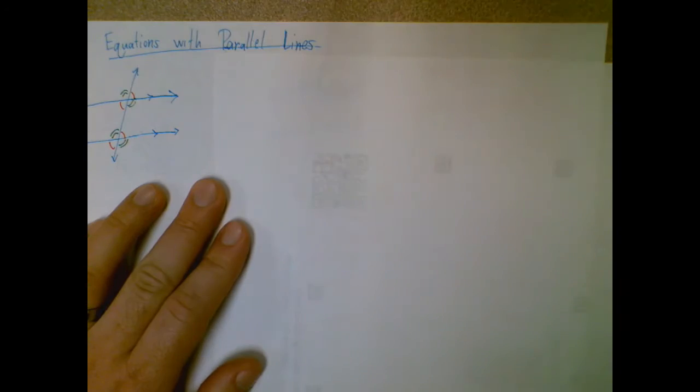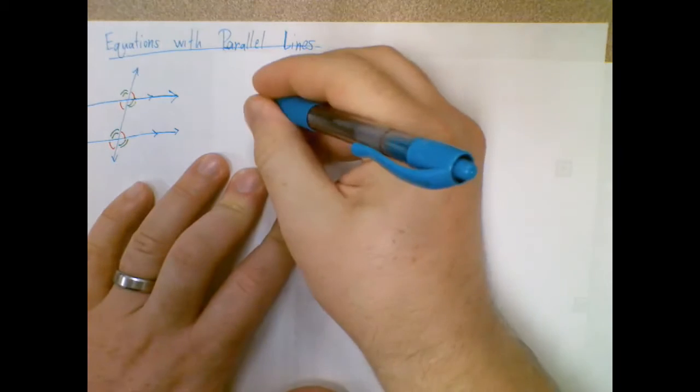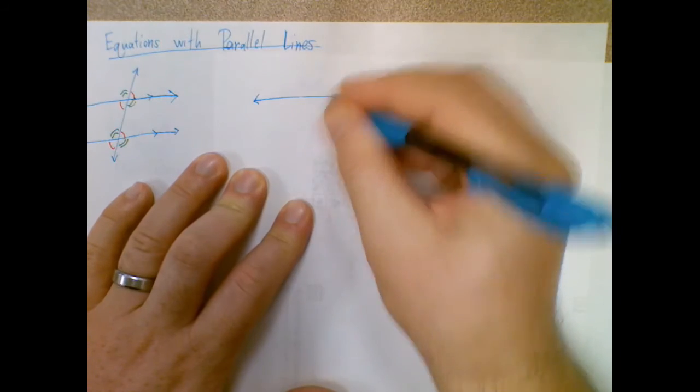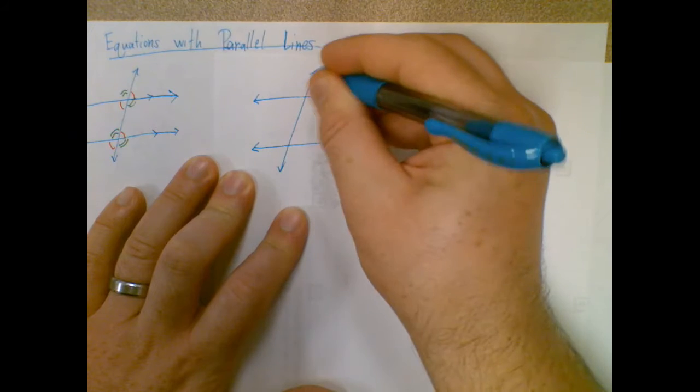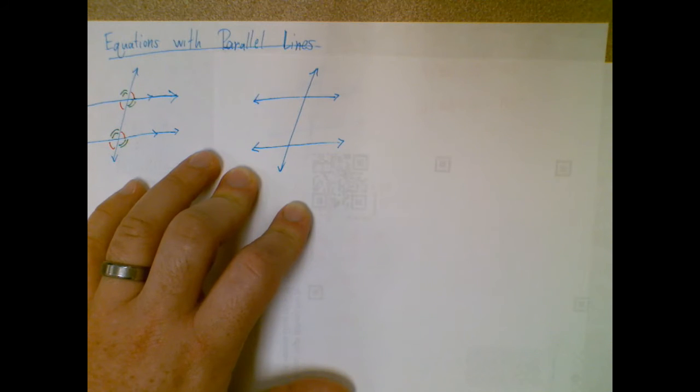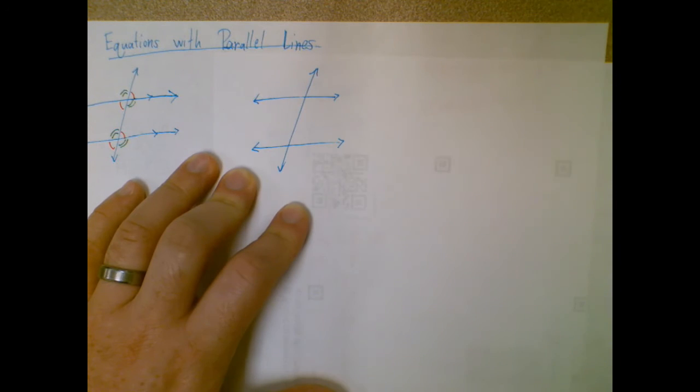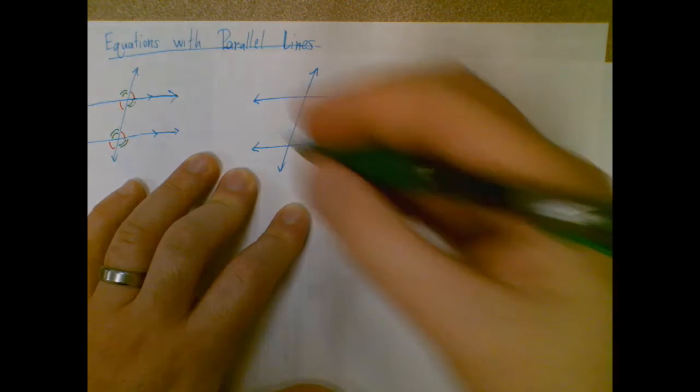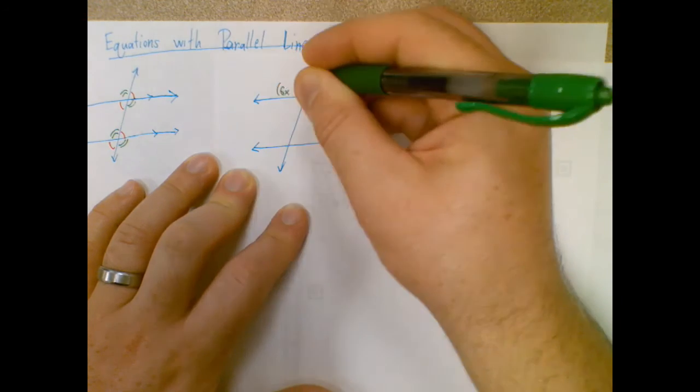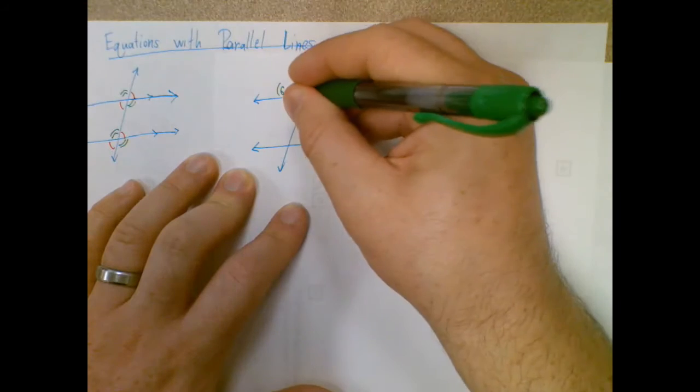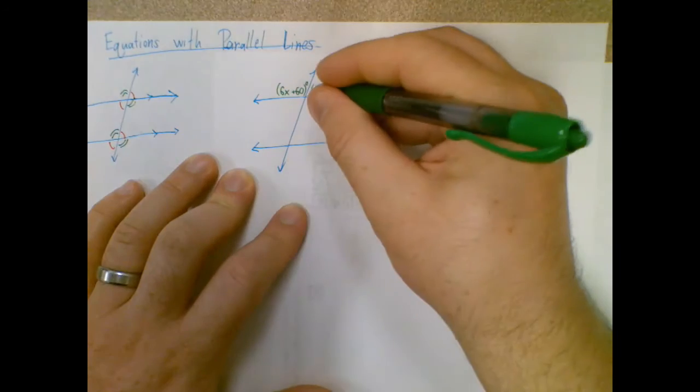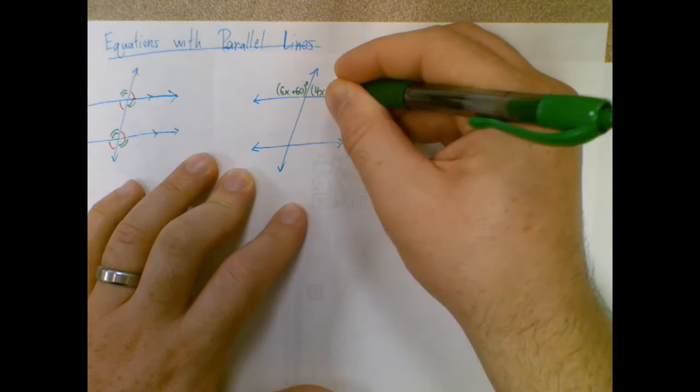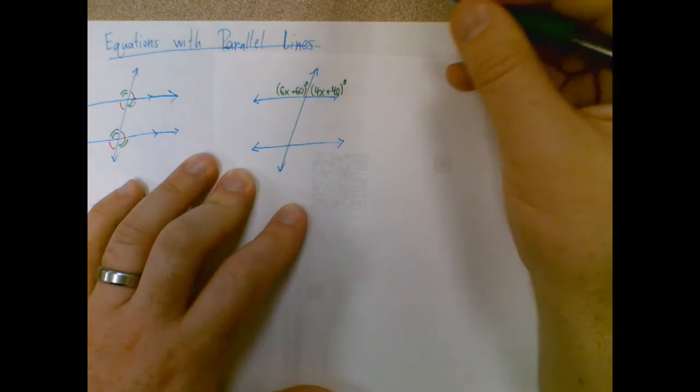So what if I change this a little bit? Let's put them on top. Let's say this one is 6x plus 60, and we'll make this one 4x plus 40.